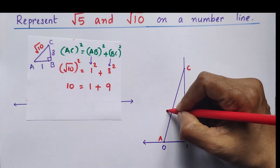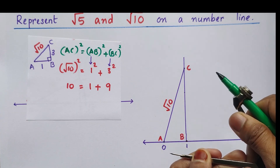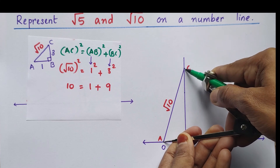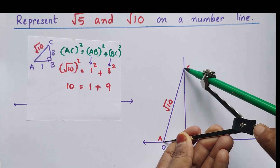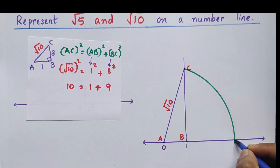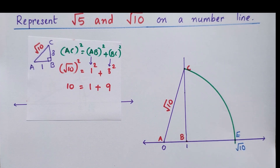The length of the hypotenuse AC is root 10. Now we have to represent root 10 on the number line. For that, we take root 10 as the radius and draw an arc. It cuts the number line, and that point represents root 10. We can name this point as E, so point E represents root 10. Both constructions are very important.